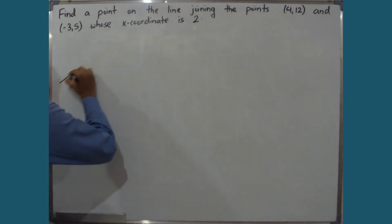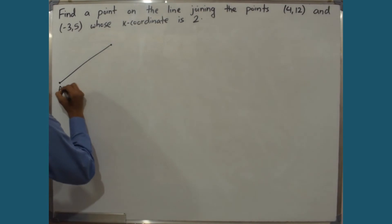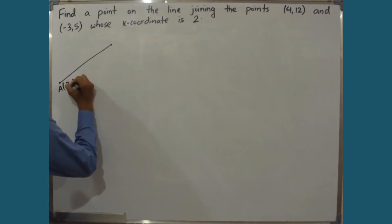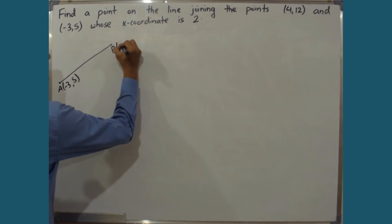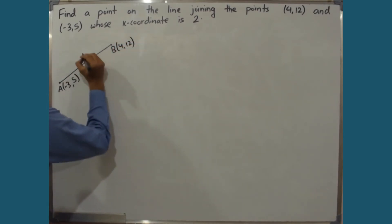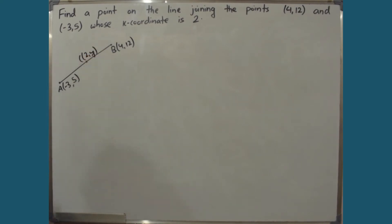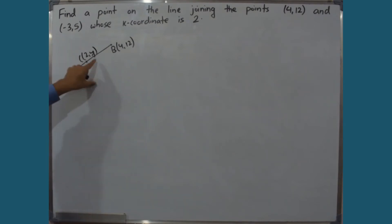Let this be our line AB, where point A has coordinates (-3, 5) and point B has coordinates (4, 12). We define point C with coordinates (2, y). Line AB is divided by point C, whose x-coordinate is 2, and we need to find its y-coordinate.